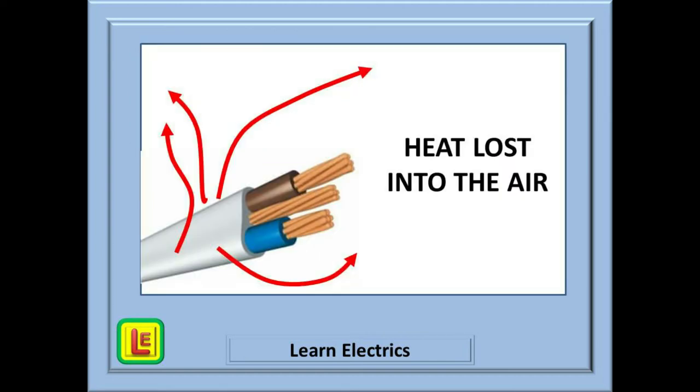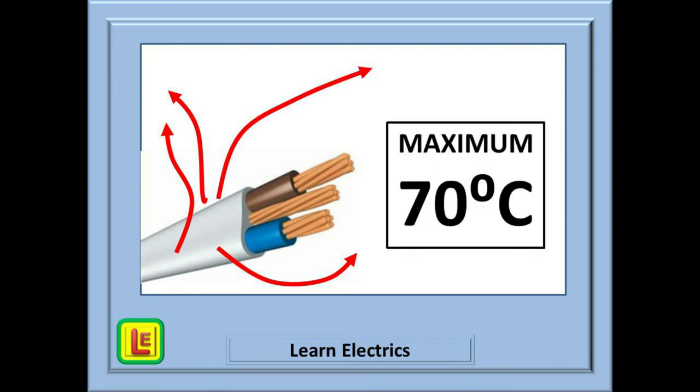How we install the cable affects this limit, and the wiring regulations give us a set of tables that tell us what these limits are. As an example, a cable may be installed on the surface of a wall by cable clips. Heat can be lost into the wall, but a great amount of heat can be lost into the surrounding air.